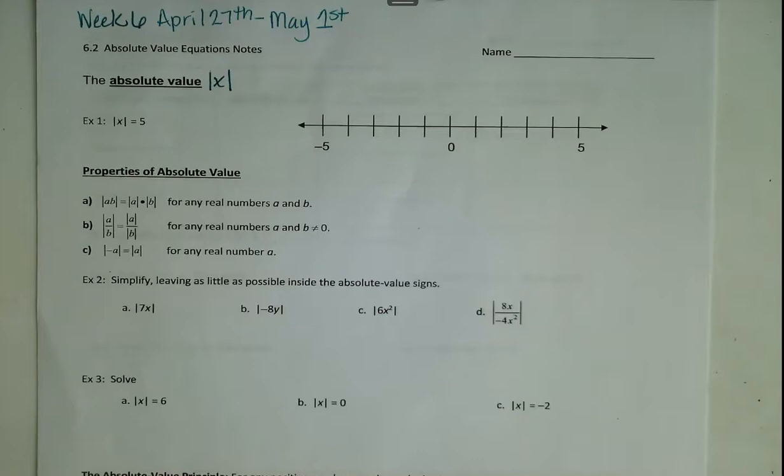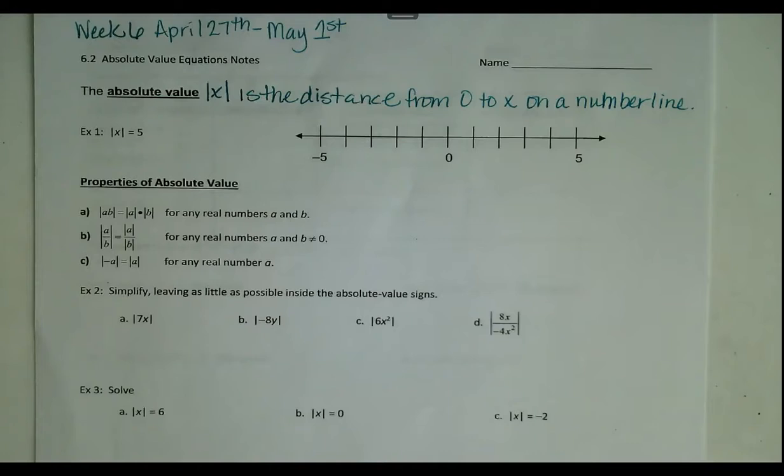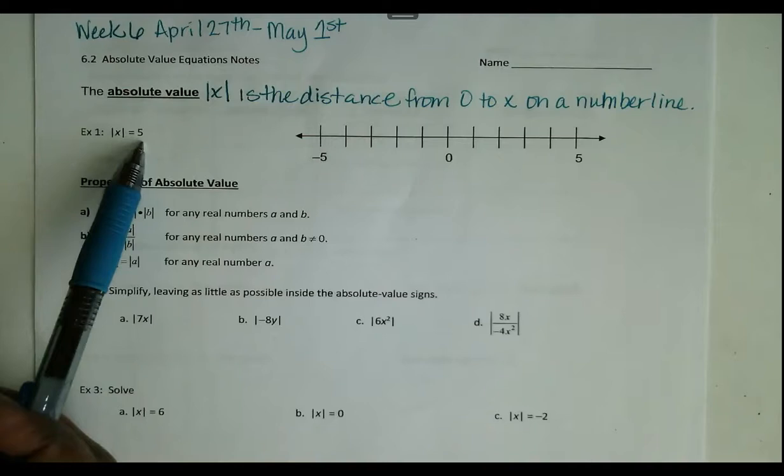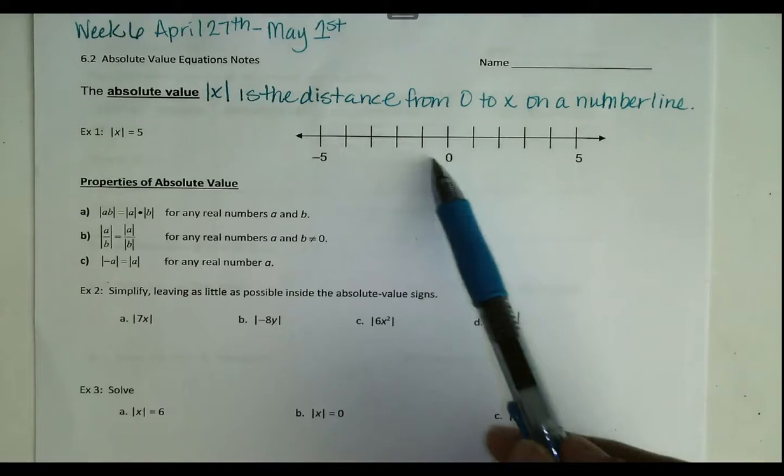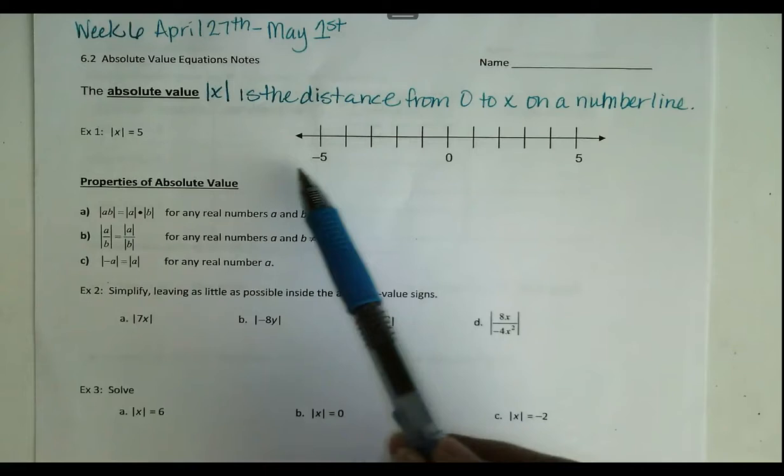The absolute value of x is the distance from 0 to x on a number line. We have this example: the absolute value of x equals 5. So we know that whatever x is, it's 5 units from 0. Of course you have positive 5 units, but then you also have negative 5 units. So the solution for this equation is both negative 5 and 5.